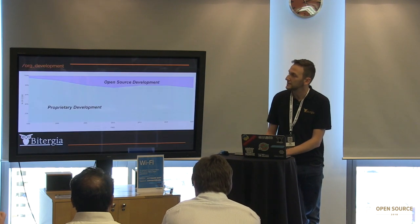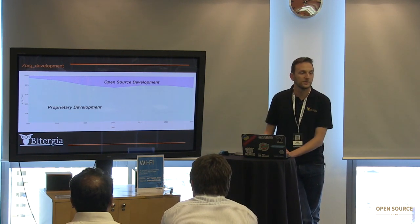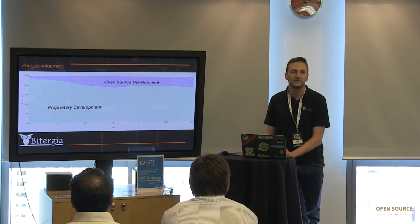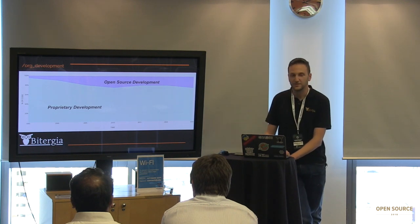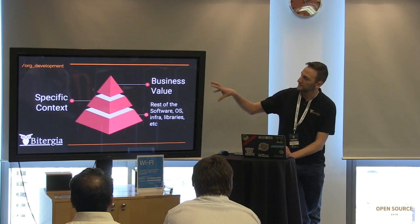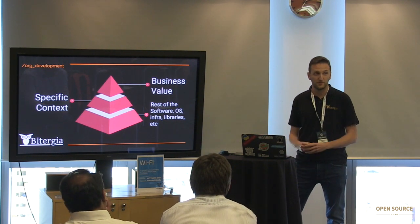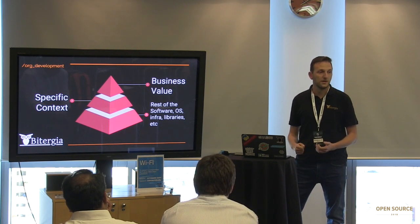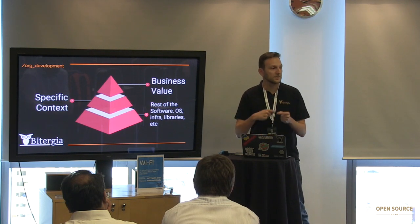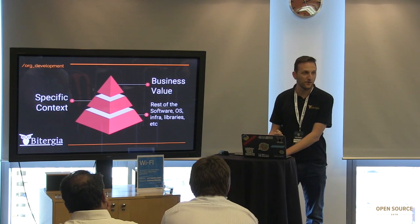This might be a company where part of the code is open source and part is proprietary software. If we think about the kind of software we are developing in our companies, we can think of three layers. The bottom layer is most of the software we are using or distributing — operating system libraries and source code not that related to the business. Then we have source code we need to slightly modify and redistribute to customers. And then we have the real things producing value for our business, which is a really small part.